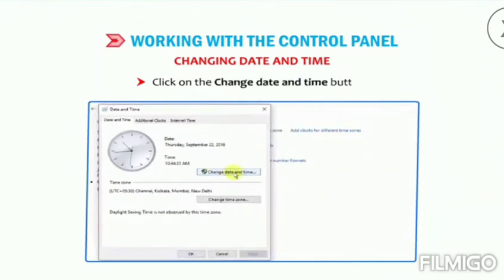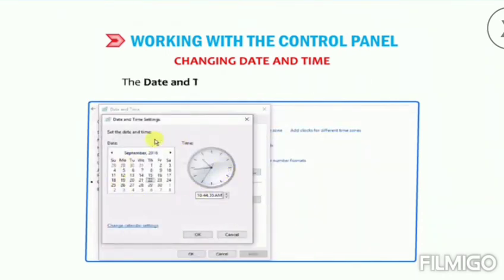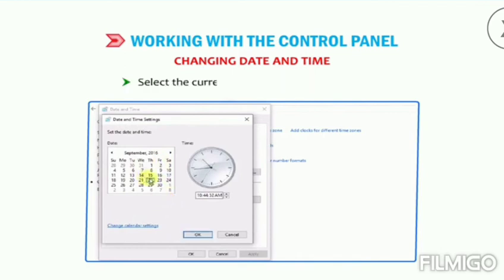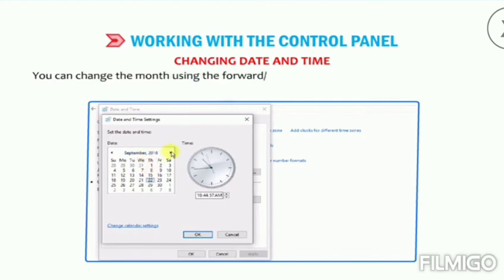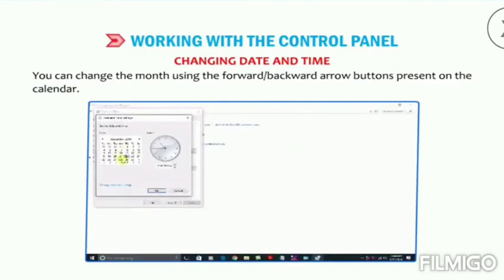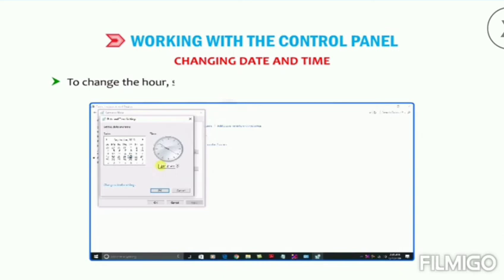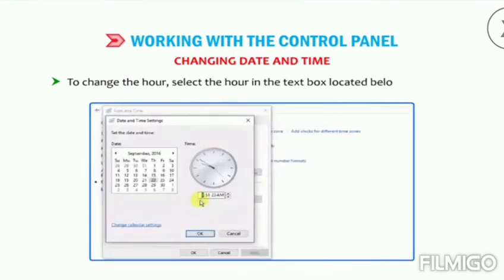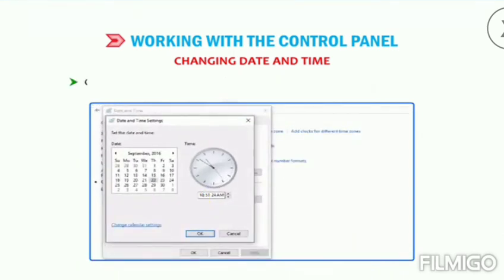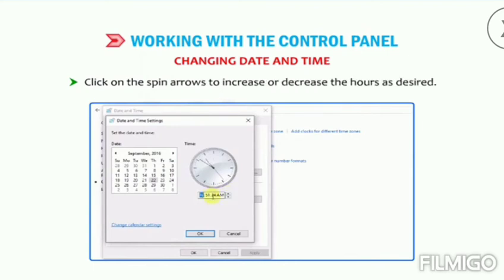Select the current day in the displayed calendar. You can change the month using the forward or backward arrow buttons present on the calendar. To change the time, select the hour in the text box located below the clock. Click on the spin arrows to increase or decrease the hours as desired. Similarly, you can change the minutes and seconds. Click OK — the date and time settings of the system will change accordingly.